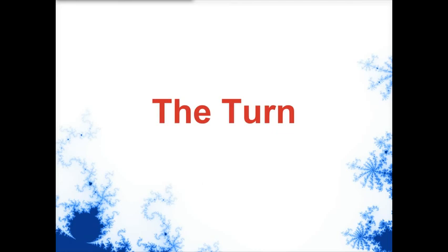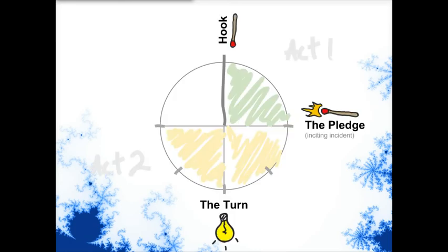We go on to act two, The Turn, which is named after an incident called The Turn. The Turn is generally a moment of illumination or enlightenment where the character learns something new — it changes his understanding or perspective. The Turn event divides act two into two pieces. The first half is the character responding or reacting passively, and after The Turn, after that new perspective happens, then the character proactively attacks. So it's from passive to active in the two halves of act two.